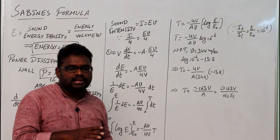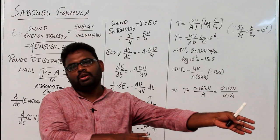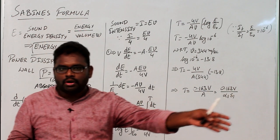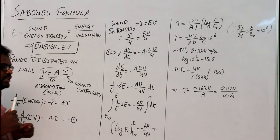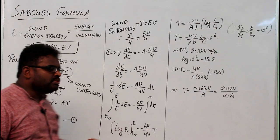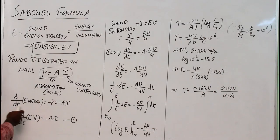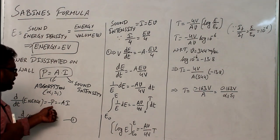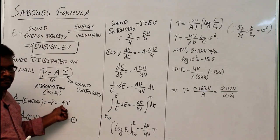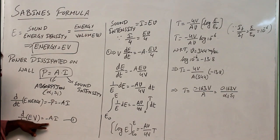Whenever power is dissipated on the wall, some energy is absorbed and lost. The rate of change of energy in the room equals the power loss. We can write: d/dt(Energy) = −P = −AI. Since energy = e × V (energy density times volume), substituting gives: V × de/dt = −A × I.